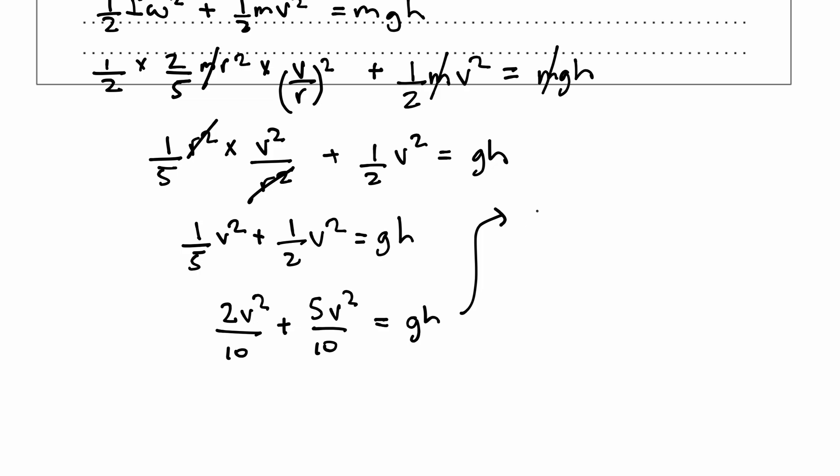I get 2v²/10 plus 5v²/10 is equal to gh. Now I can say 7v²/10 is equal to gh. So 7v² is equal to 10gh.